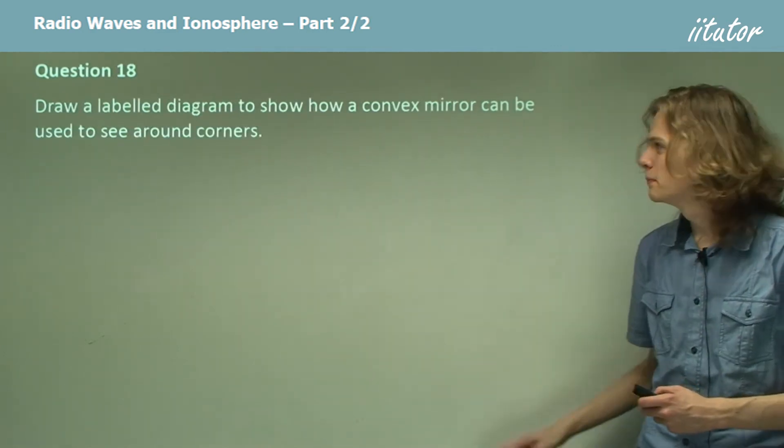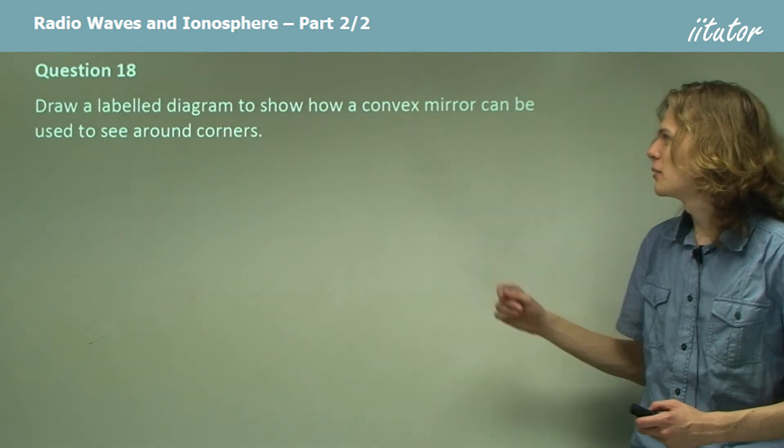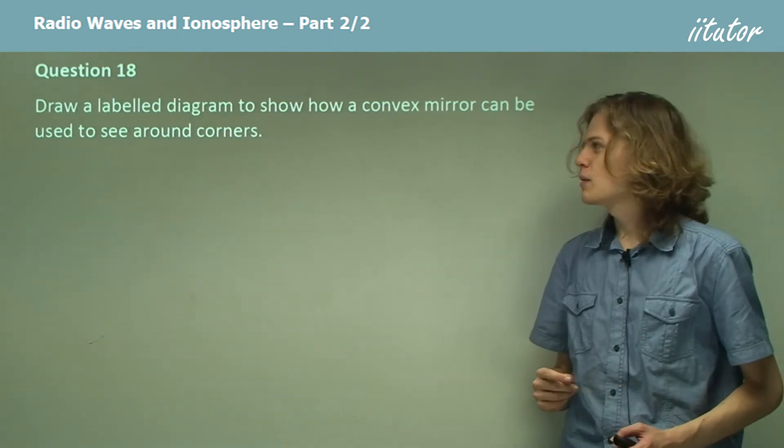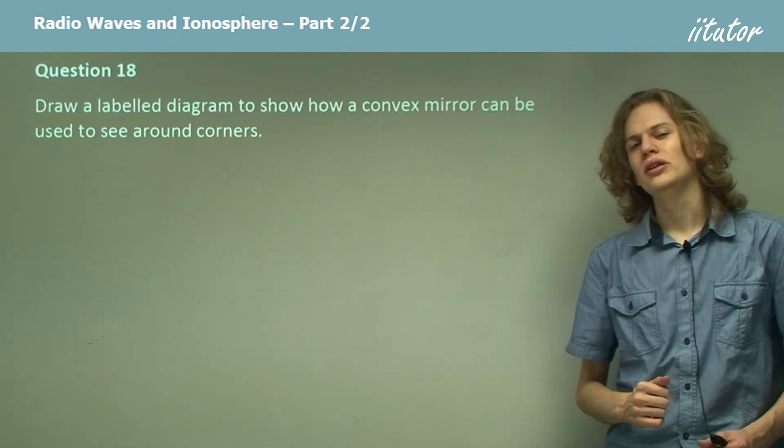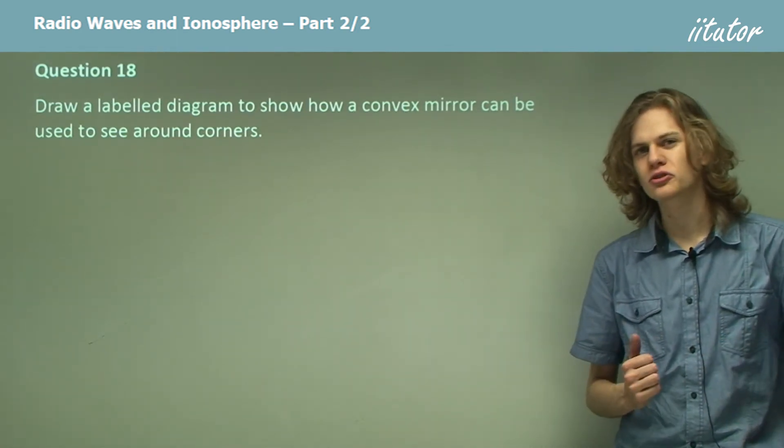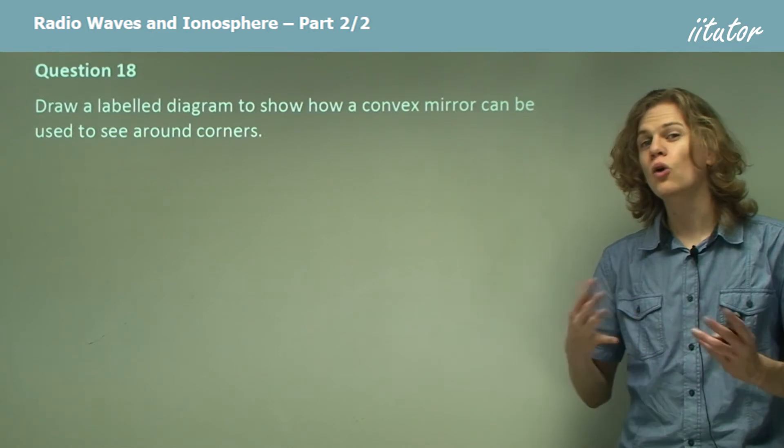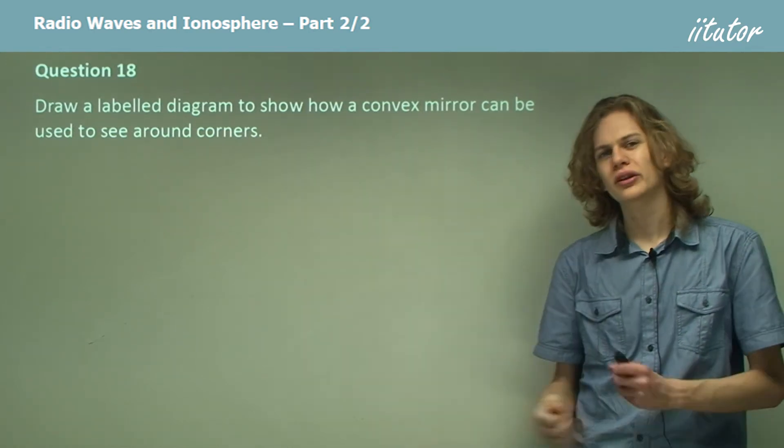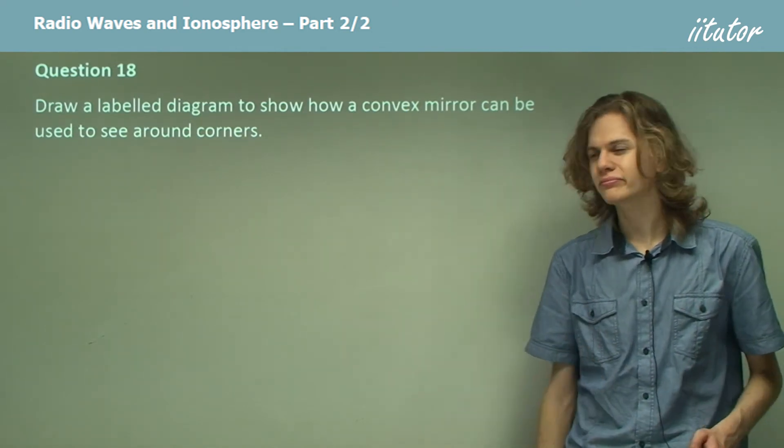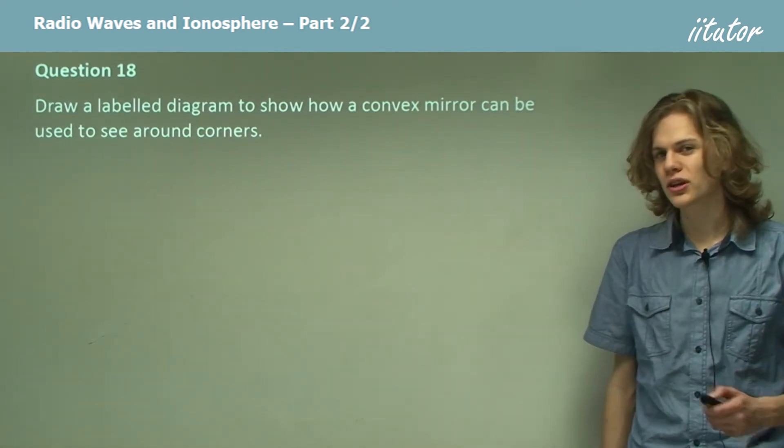Question 18. Draw a labeled diagram to show how a convex mirror can be used to see around corners. One of the useful applications of convex mirrors is that they can see a much wider field of view. And so it can show you around corners, even if you are unable to see them yourself. So our diagram might look something like this.